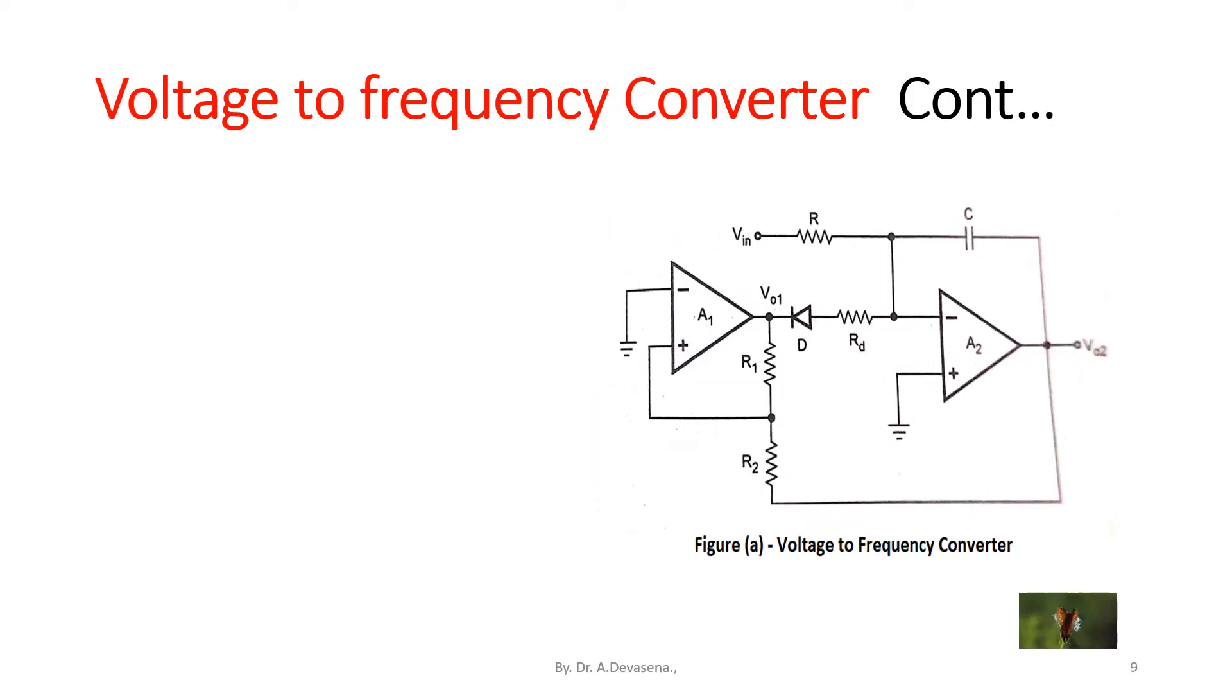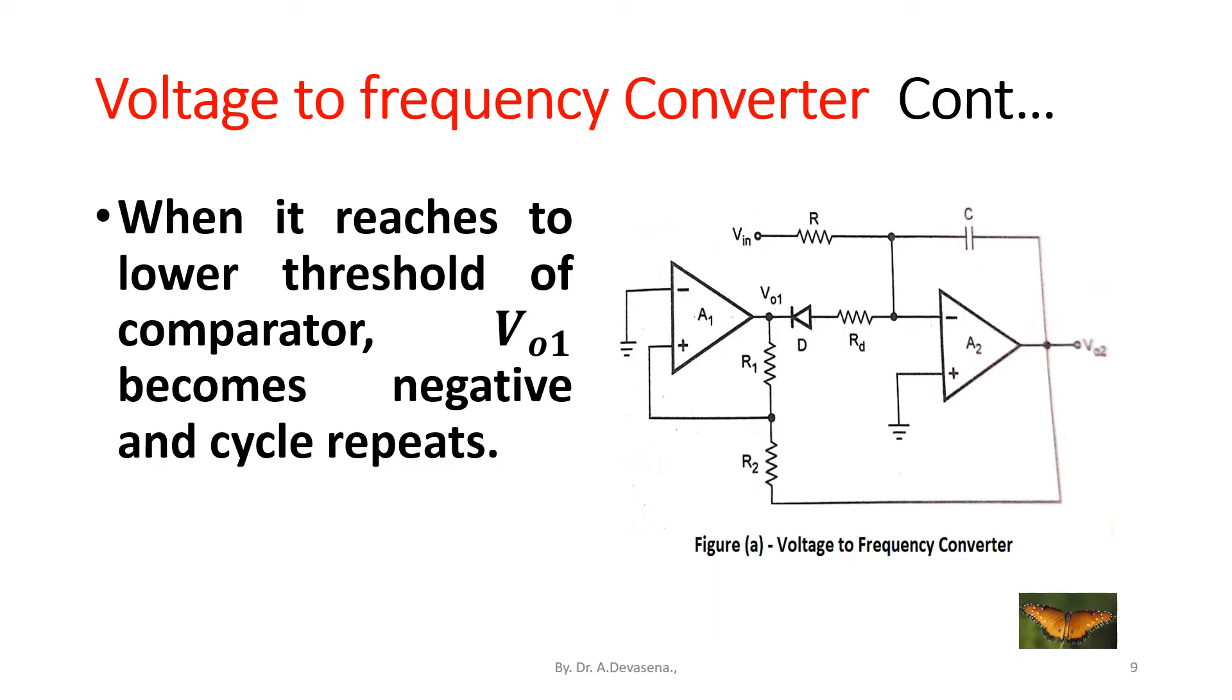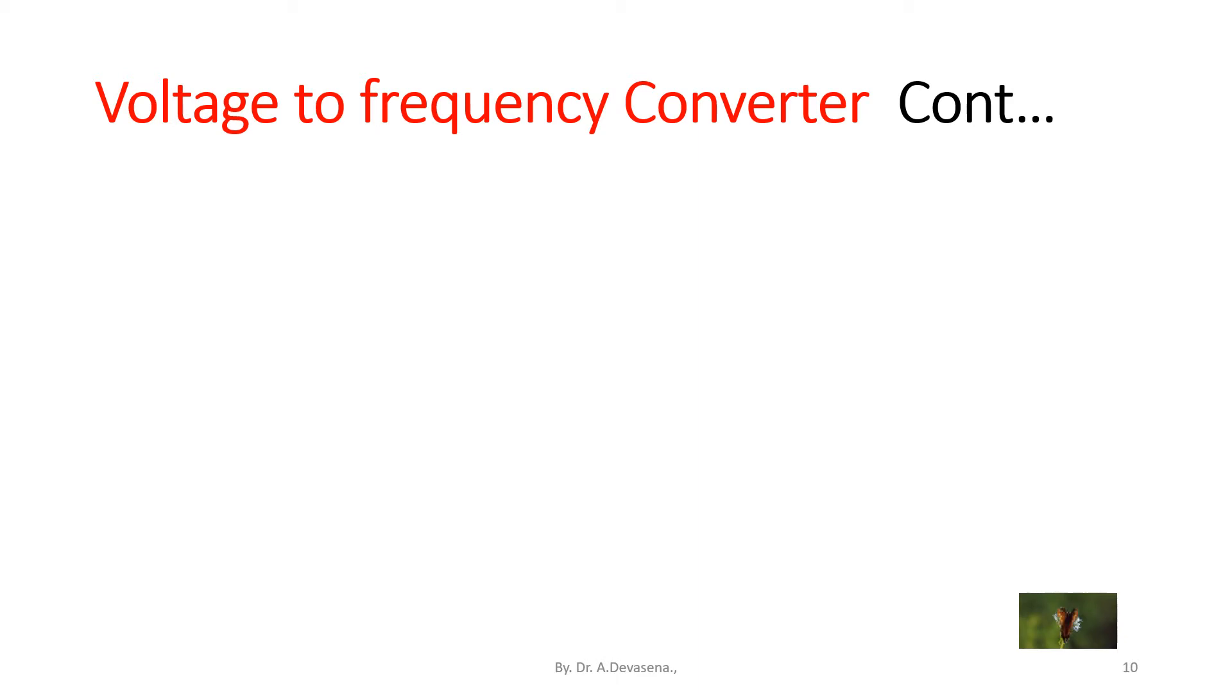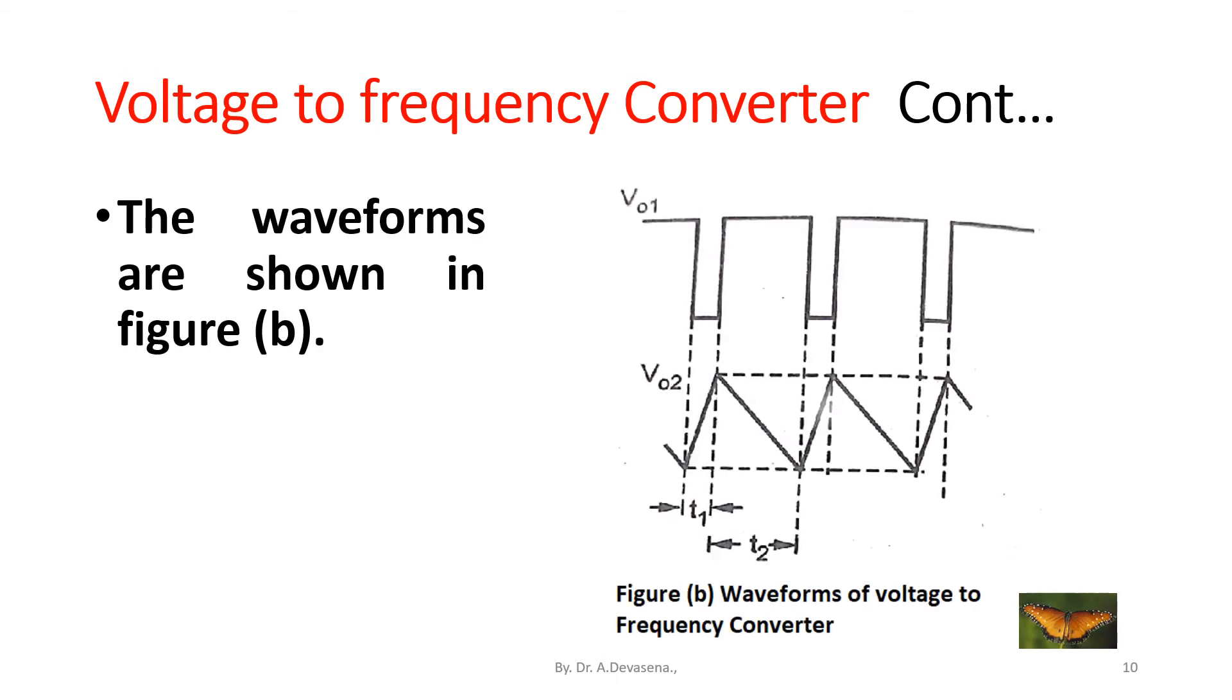When it reaches the lower threshold of the comparator, V_o1 becomes negative and cycle repeats. The waveforms are shown in figure B. Here is a representation of the output waveforms.